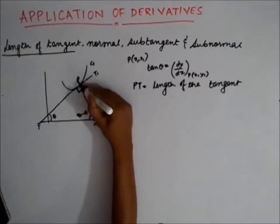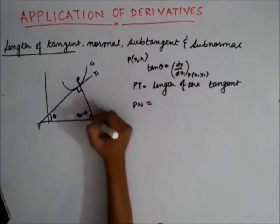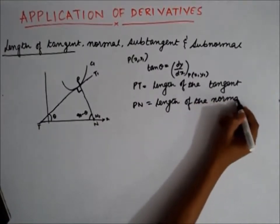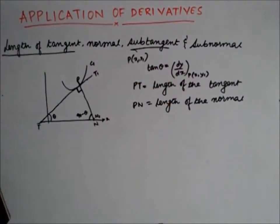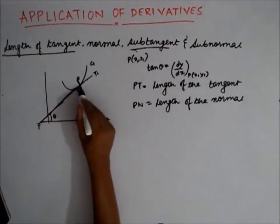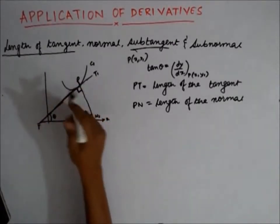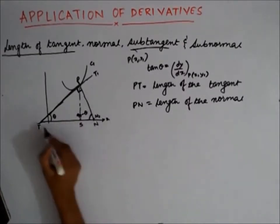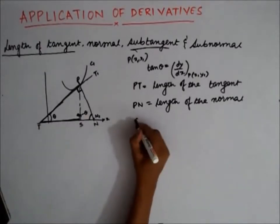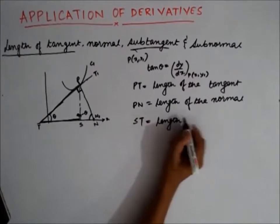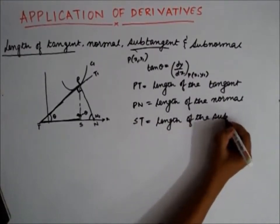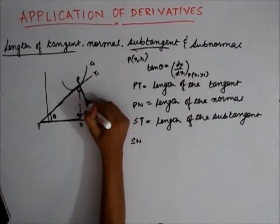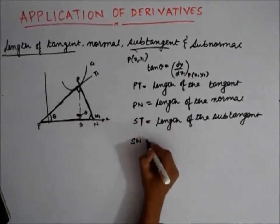Similarly, PN is the length of the normal. The subtangent is defined as the projection of the tangent on the x-axis. If I project PT onto the x-axis, this length ST is the length of the subtangent. Similarly, the projection of the normal on the x-axis is the length of the subnormal.